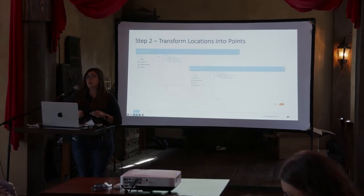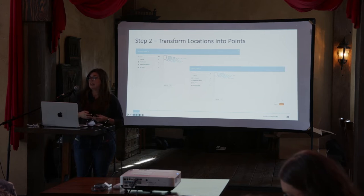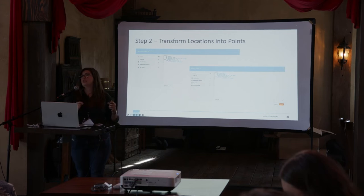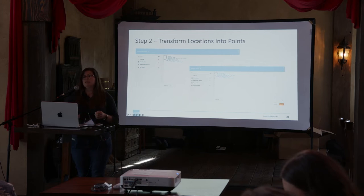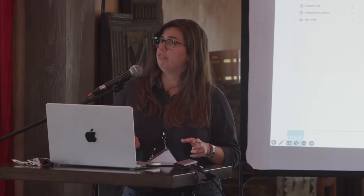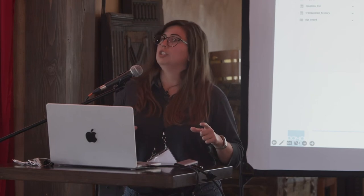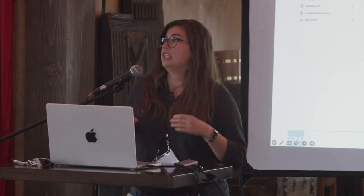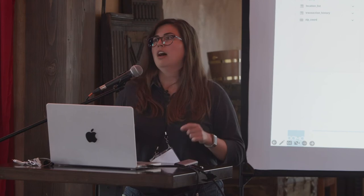The next step is to take both the locations list and the transaction history and join those to the table we made — the unique list of latitude and longitude by zip code. In each case, we join by zip code, and then we use the ST_Point function to translate the latitude and longitude into an actual point on the sphere — in other words, the globe. You do this for both datasets so that you now have a quantitative measure to compare against.